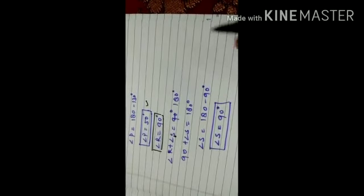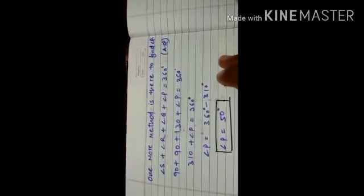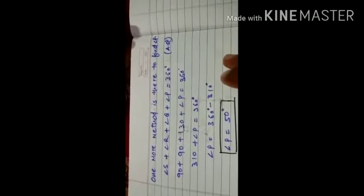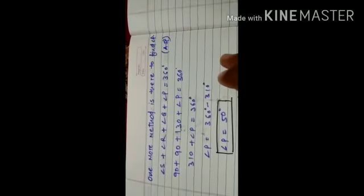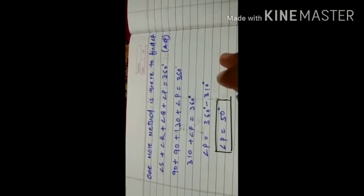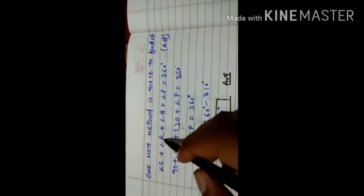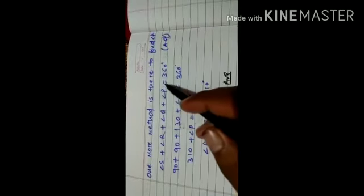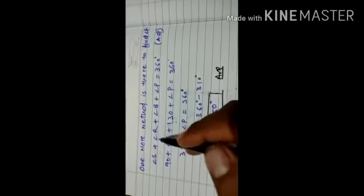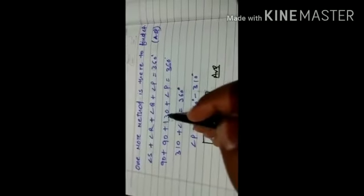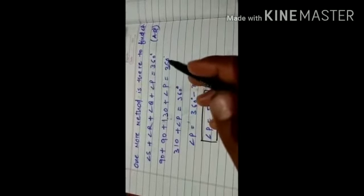So we can solve this question in this way. So we can solve this question and we will choose angles and property of a quadrilateral. So the sum of all four angles of a quadrilateral is 360 degrees. Angle S plus angle R plus angle Q plus angle P is equal to 360 degrees.